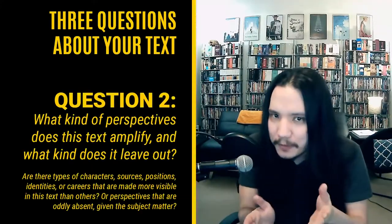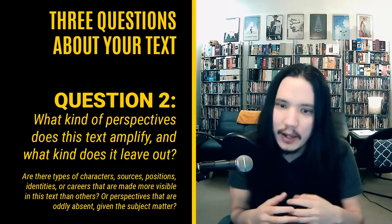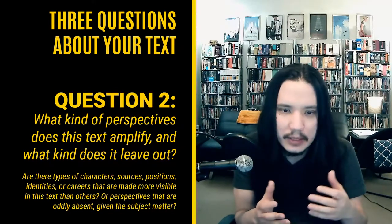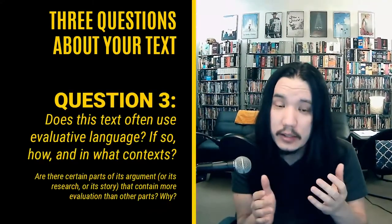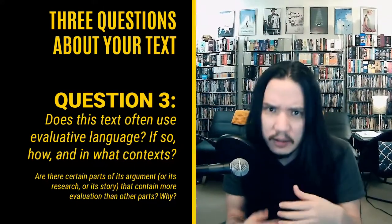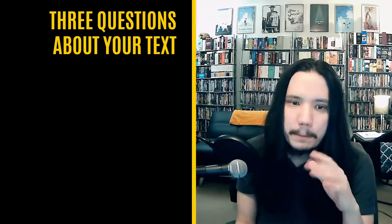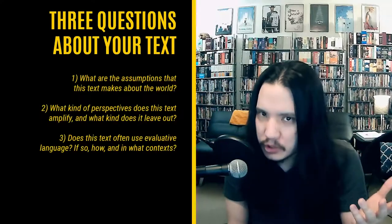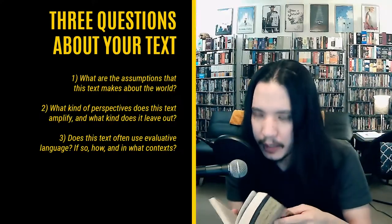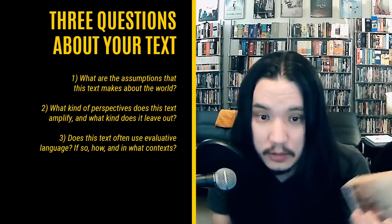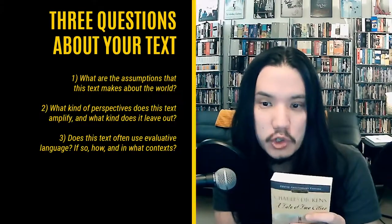Question two: what kinds of perspectives does this text amplify, and what kinds does it leave out? This is that selective focus phenomenon we talked about earlier. Question three: does this text use evaluative language, and if so, what kind, how often, and in what context? Keep in mind you can do this sort of analysis with fiction as well as non-fiction. If I'm looking at 'A Tale of Two Cities,' it still has perspectives — I might ask what kind of characters Dickens chooses to pay attention to, and what evaluative language he uses in describing people, settings, or events.